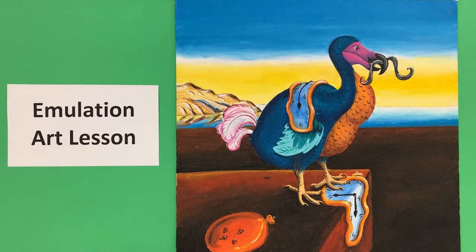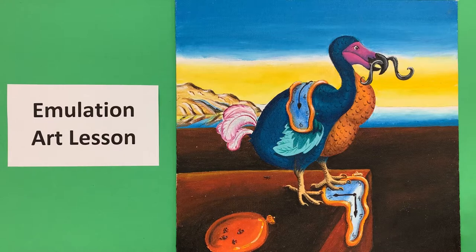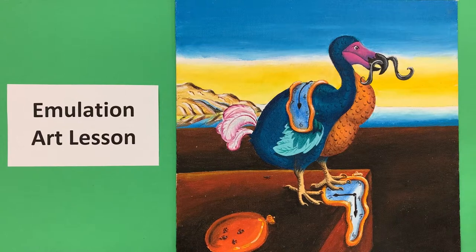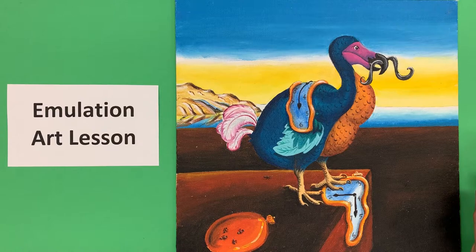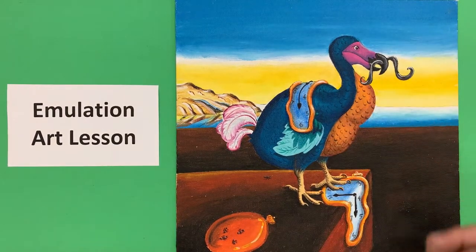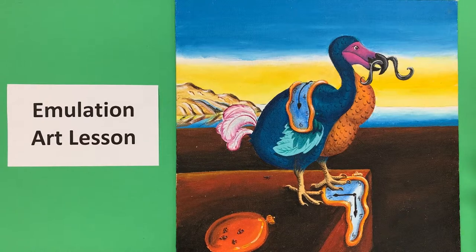Emulation can be a great way to explore art and learn about an artist and their own way of producing artwork. Here we have an image that's inspired by Salvador Dali and his painting Persistence of Memory, but instead of a tree form, it's been done with a dodo — for an alliteration connection.